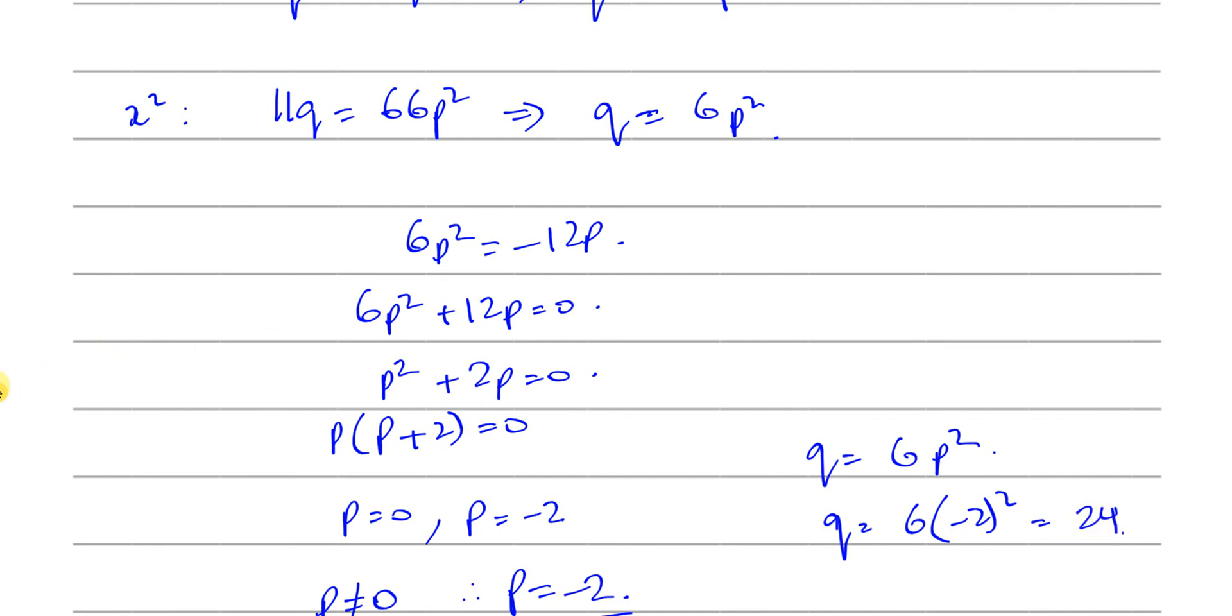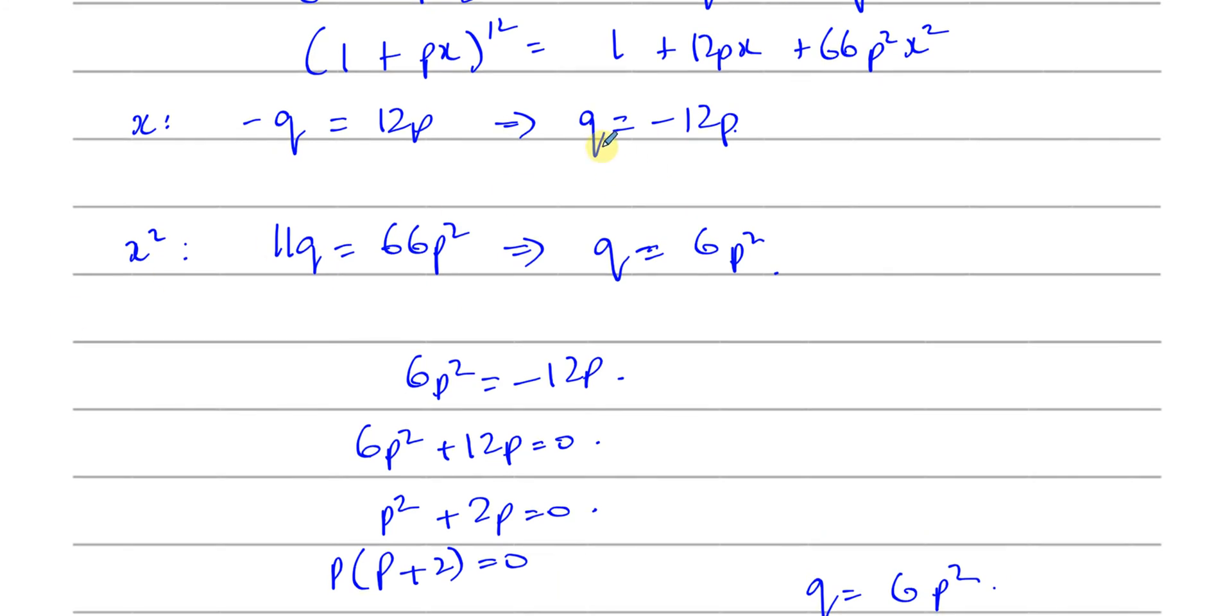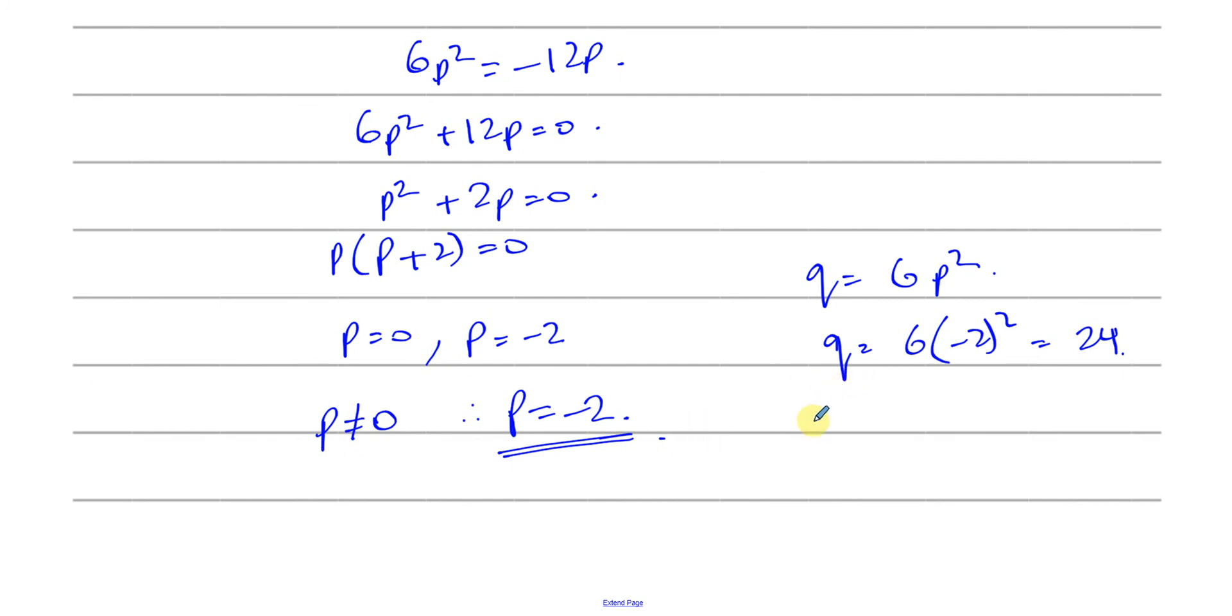Or we could have, in fact, used this equation. We could have put Q equals minus 12 times minus 2. That would have been easier. Anyway, in any case, we get 24. So we have P equals minus 2, and Q is equal to 24. And there are the two solutions.